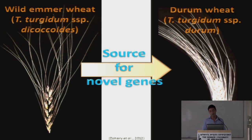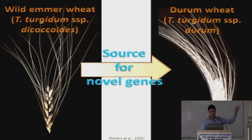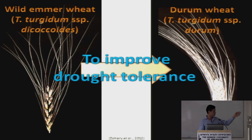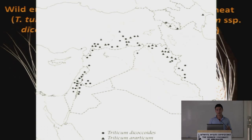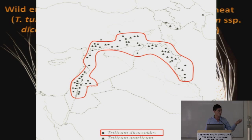Wild emmer wheat is a source of novel genes for commercial wheat varieties, such as durum wheat used for pasta. These genes can be transferred, and transferring them to commercial varieties may significantly improve drought tolerance. Interestingly, this wild wheat comes from places such as the Middle East.